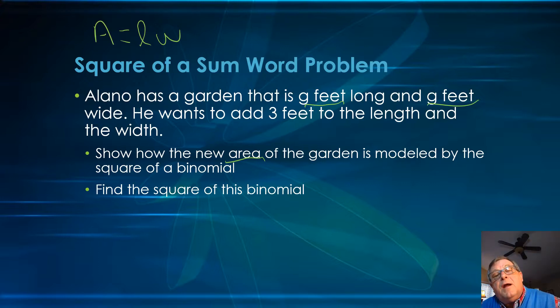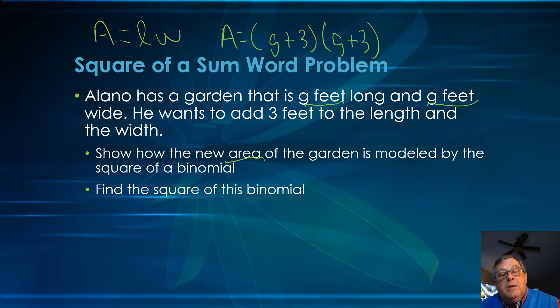Which means now we would have an area that is equal to g plus three for the length, where he adds three feet, and then the width is also g plus three. And what we have is the square of a sum. So if we do this, the square of a binomial, we can say then this is g plus three squared.